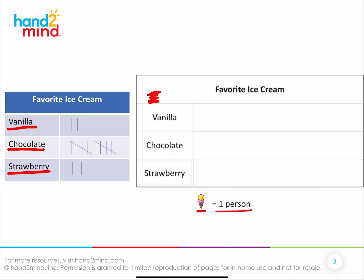Here is our graph. Our graph has a name — it's called the favorite ice cream graph — and the categories are vanilla, chocolate, and strawberry. When I look at my tally chart, I can see how many people liked vanilla ice cream. Two? Yes — one, two.